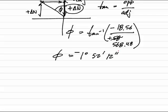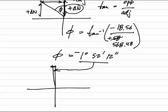Now consider what's happening here. I've got a change in northing that is about 568 feet, and a very small change in easting. That's going to give me a very small angle. That angle right there.